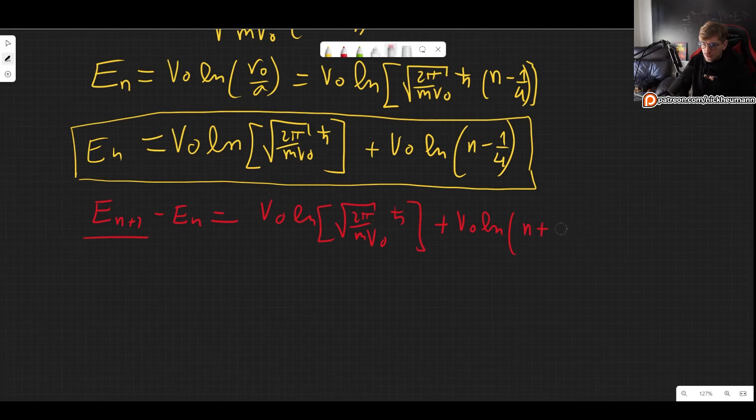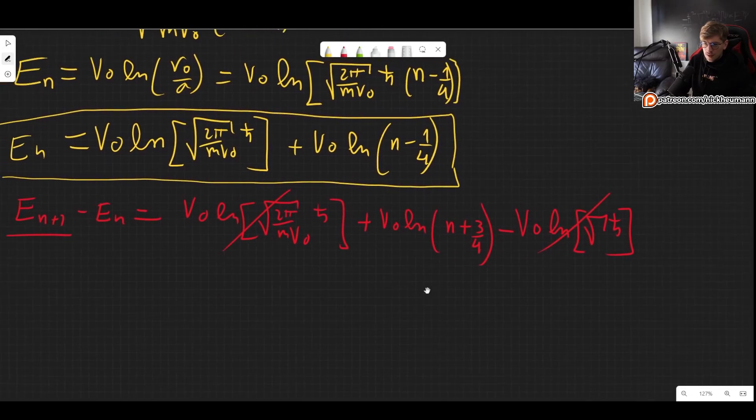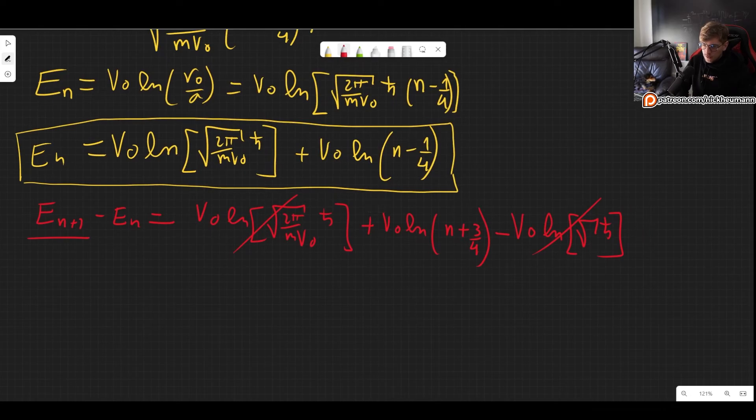But that is simply three over four so we get n plus three over four. And then we get minus E_n. But here we get this part again and the mass is the same the potential is the same so we get exactly the same thing but with a minus sign. So this and this cancels out.